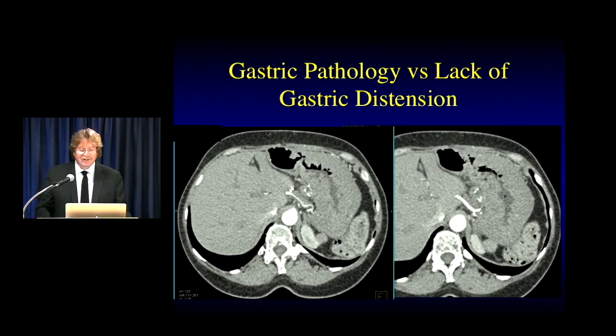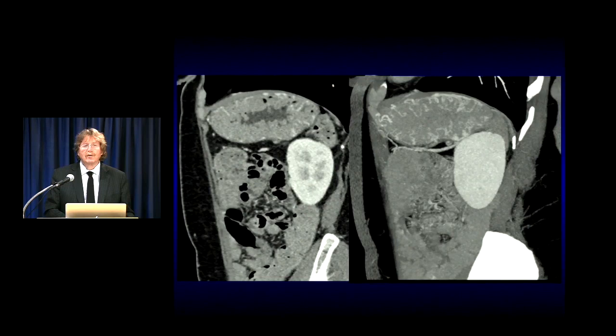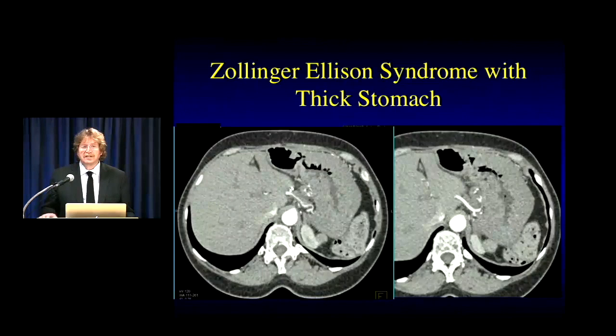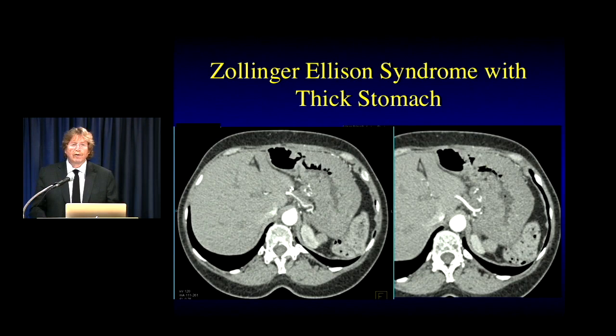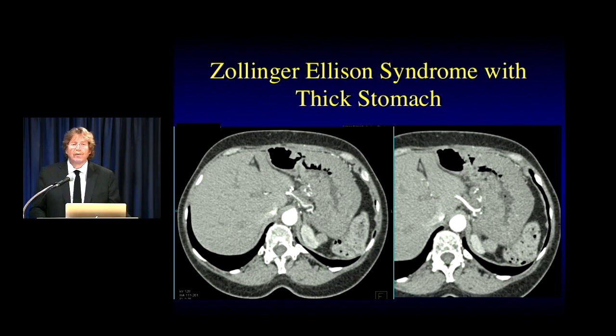In another example, the technologist swore they gave enough water — 250 cc's when the patient got on the table. In fact, this was the stomach: the patient had Zollinger-Ellison, and that's diffuse gastric wall thickening. It's very important to make certain you do the protocols. No one ever got yelled at for giving too much water; if you don't give enough, there's no excuse. You need to give enough water or positive contrast to distend the stomach.